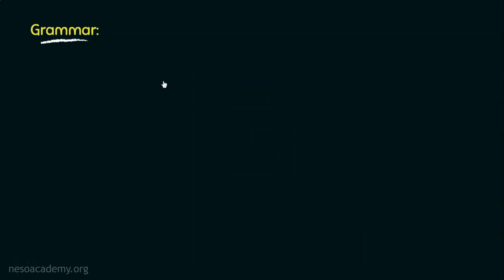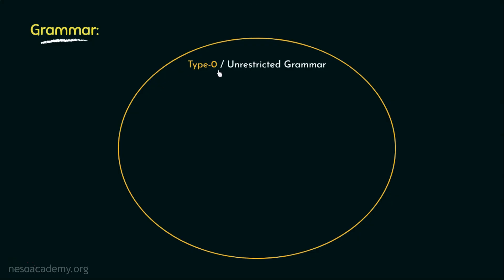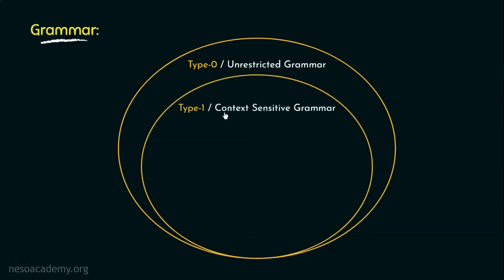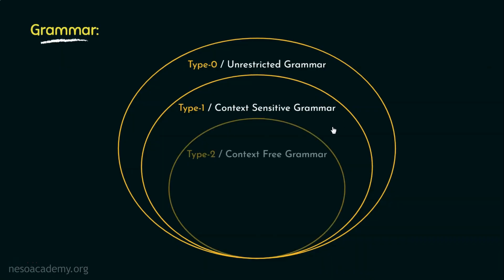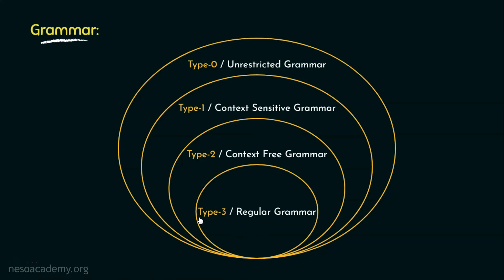To summarize: the biggest set with no restrictions is type 0 or unrestricted grammar. Applying the restriction of having the same or more elements on the right hand side than the left gives the smaller set — type 1 or context sensitive grammar, also known as the length increasing grammar. Applying the restriction of having only a single non-terminal on the left hand side gives the even smaller set — type 2 or context free grammar. Finally, applying restriction on the right hand side specifying the order of terminal and non-terminals gives the smallest set — type 3 or regular grammar. The type 2 or context free grammars are the ones we will focus on in this chapter on syntax analyzers.